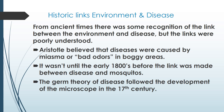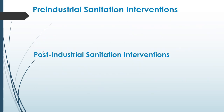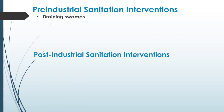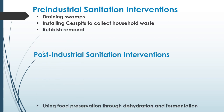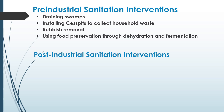The germ theory of disease followed the development of the microscope in the 17th century. Pre-industrial sanitation interventions included draining swamps, installing cesspits to collect household waste, rubbish removal, using food preservation through dehydration and fermentation, and building aqueducts to transport fresh water.